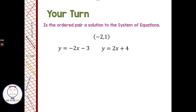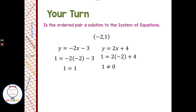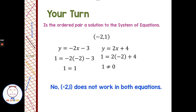Let's try another one — pause the video and see if (−2, 1) is a solution to the system of equations. Welcome back! We put x = −2 and y = 1 into the first equation: negative two times negative two is 4, minus 3 is 1, so it works in the first equation. In the second equation: 2 times negative two is −4, plus positive 4 is 0, and 0 does not equal 1. So this is not a solution for the system.